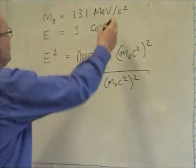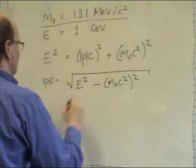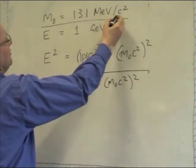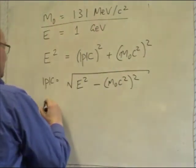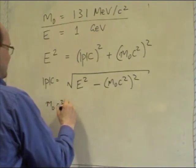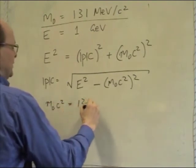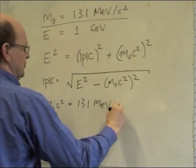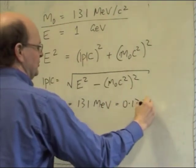Instead, you simply re-arrange the expression for M nought. So if you take this C squared, C is actually a number and not a unit, put it up with the M nought, you get M nought C squared equals 131 MeV, which is equal to 0.131 GeV.